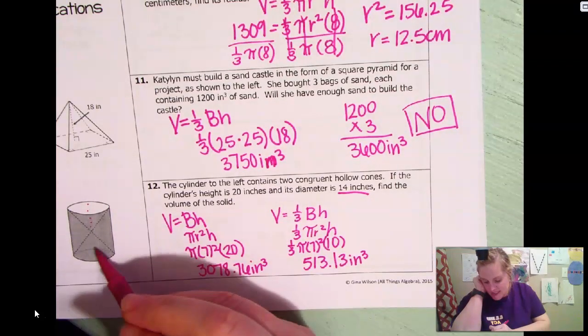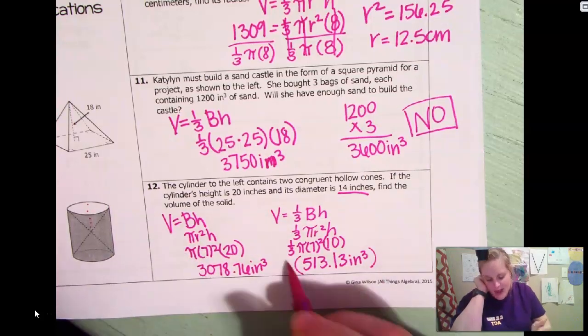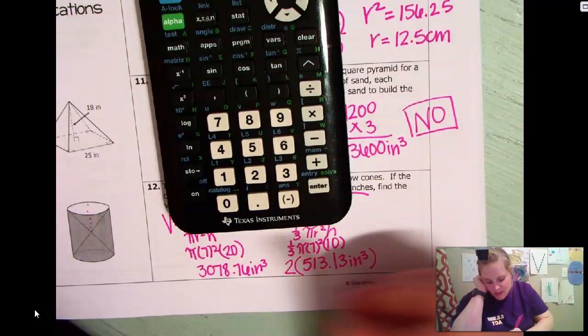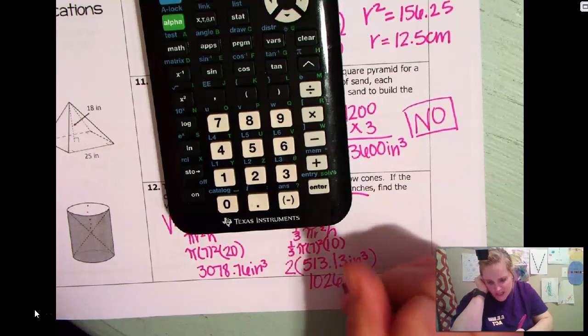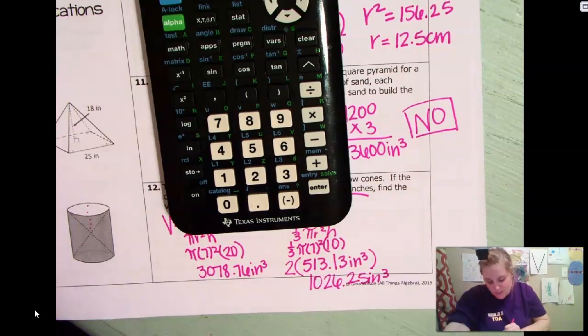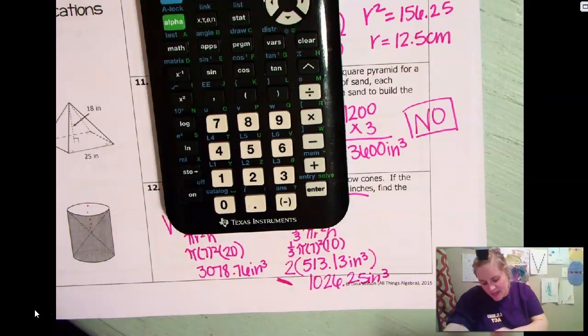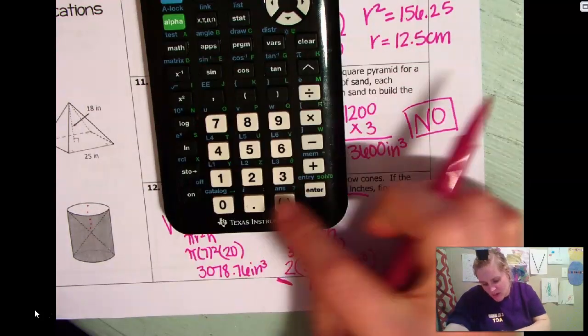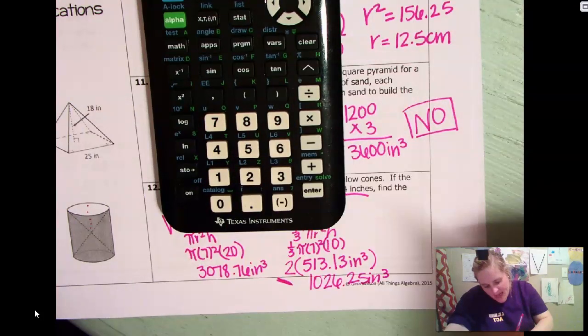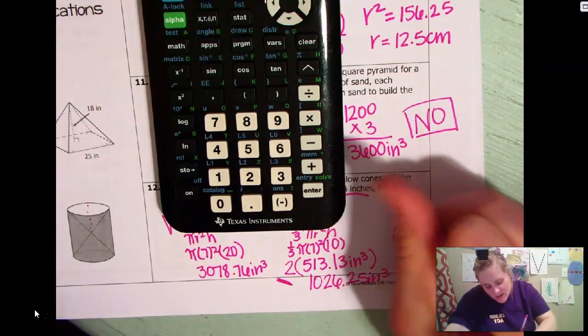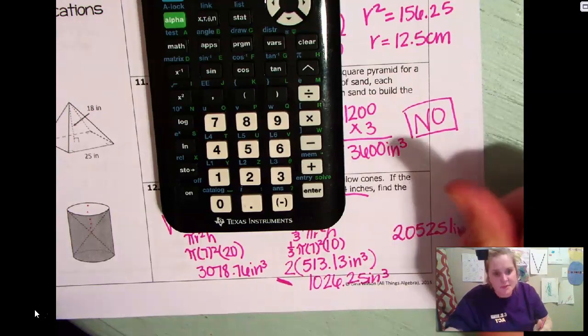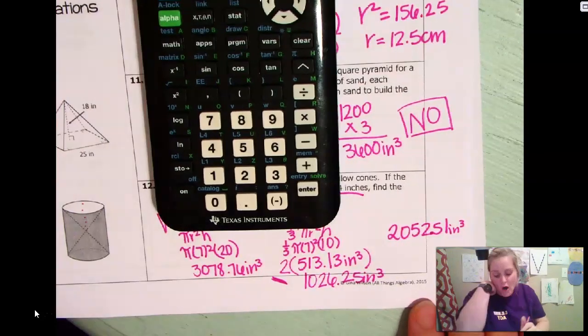Now this is for one of those cones. The other one that meets it is also going to be exactly the same. So I can literally just multiply that by two. There's no reason for me to do that whole process again. So that's going to be 1026 and 25 inches cubed. Now, the solid would just be the difference between those two. So I would just subtract 3078.76 minus 1026.25. That gives me 2052 and 51 inches cubed. That would be the volume of the solid piece.